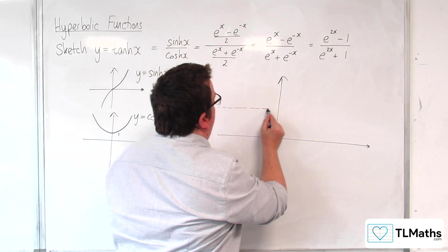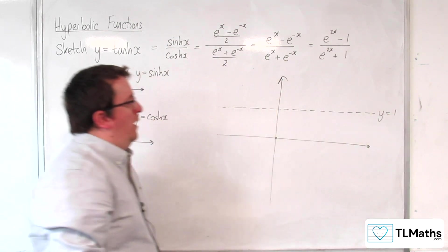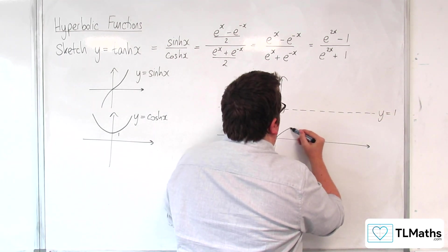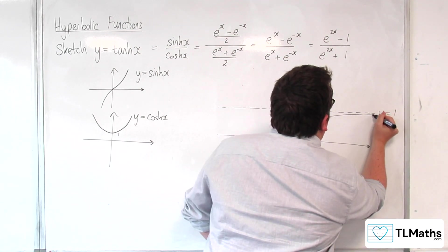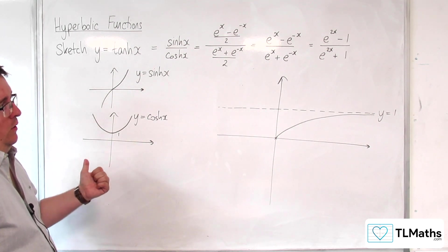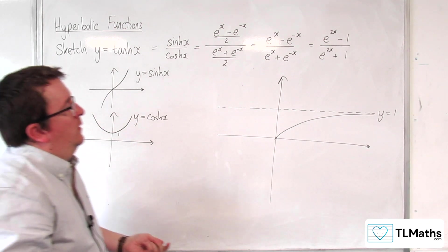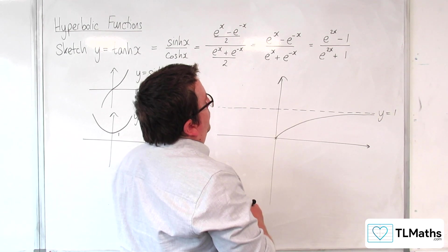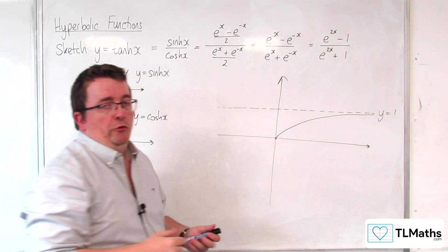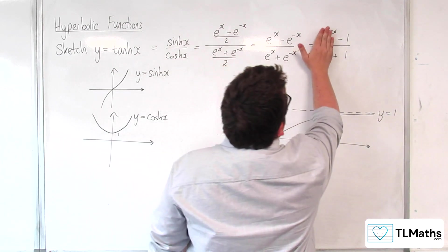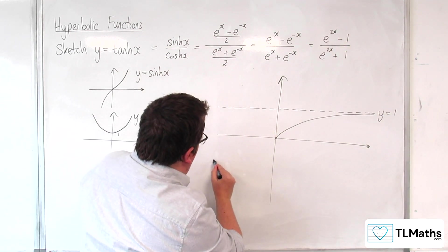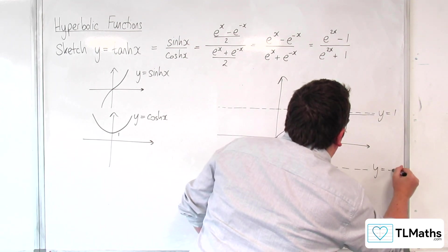So we've got a horizontal asymptote at y equals 1, and the curve is tending towards that line. Now, as x gets larger in the negative direction, these two values are going to get smaller and smaller and tend towards 0, and we're going to get closer and closer to minus 1 over 1, which is negative 1. So there is a horizontal asymptote at y equals minus 1.